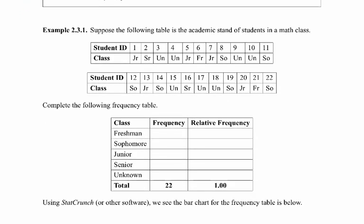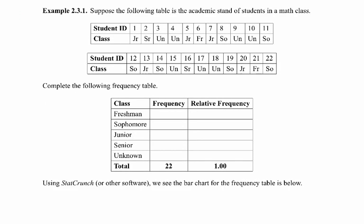So let's look at an example. Suppose the following table is the academic stand of students in a math class, so meaning their year. Either they're a freshman, a sophomore, a junior, a senior. UN stands for unknown. I just wanted to have another category here. So first thing we can do, let's go ahead and put this into a frequency table.